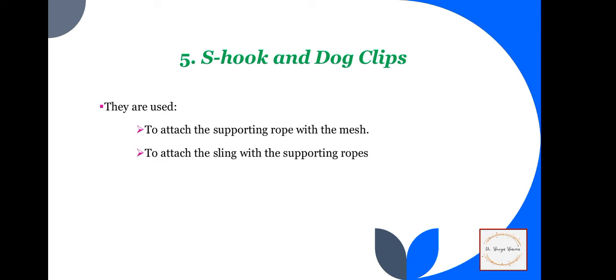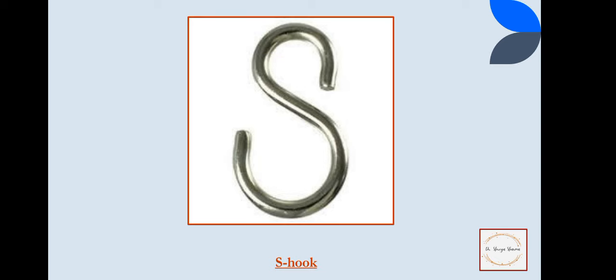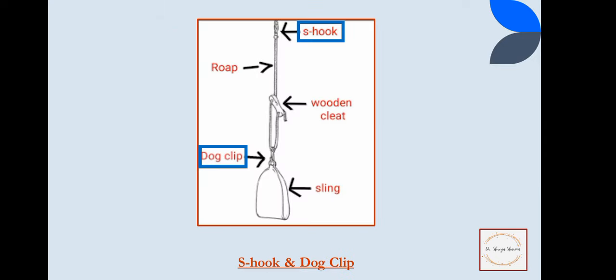Next are the S-hook and dog clips. Their work is to attach the supporting rope with the mesh and to attach the sling with the supporting ropes. The S-hook and the dog clip are used for these connections.